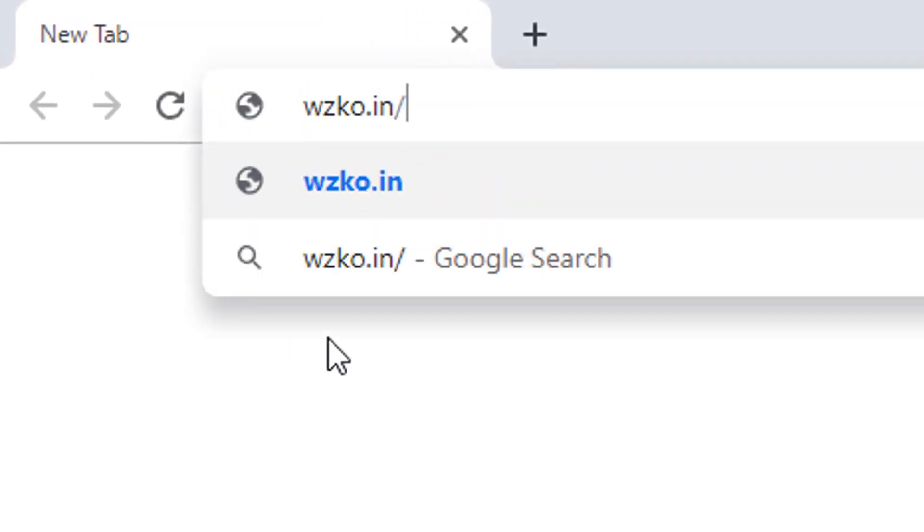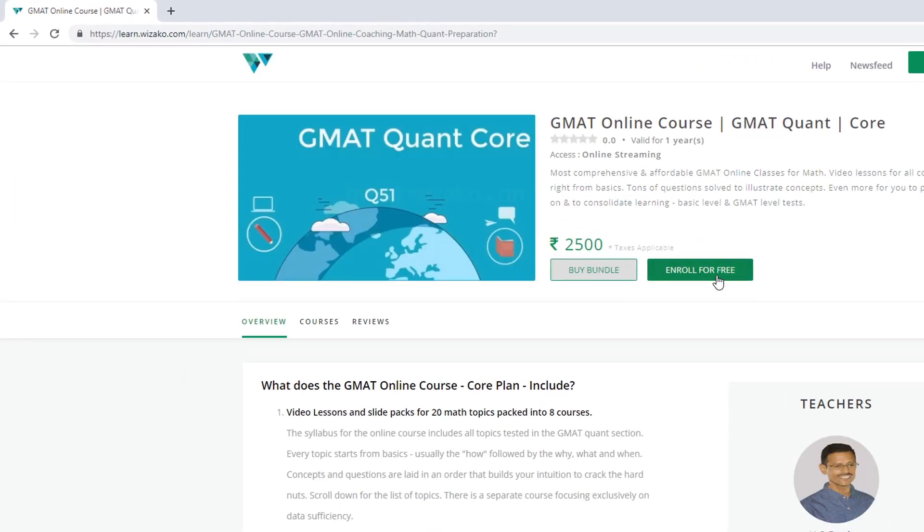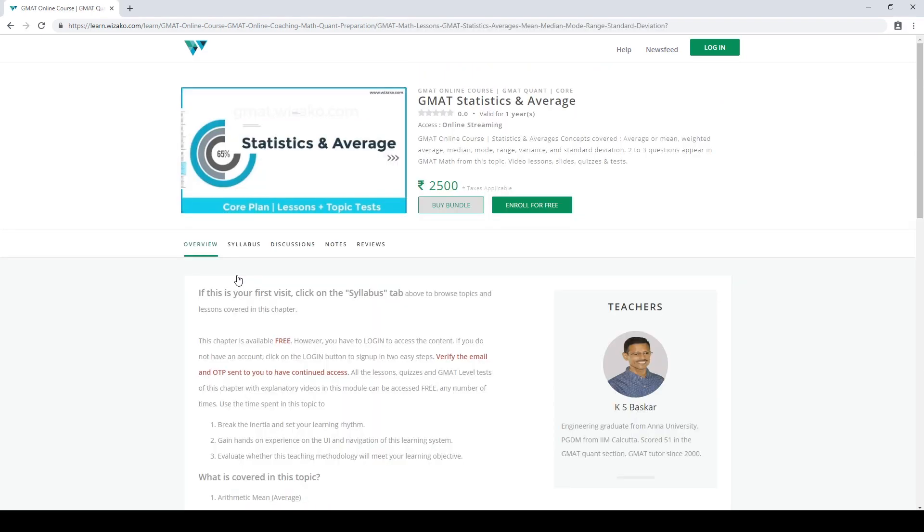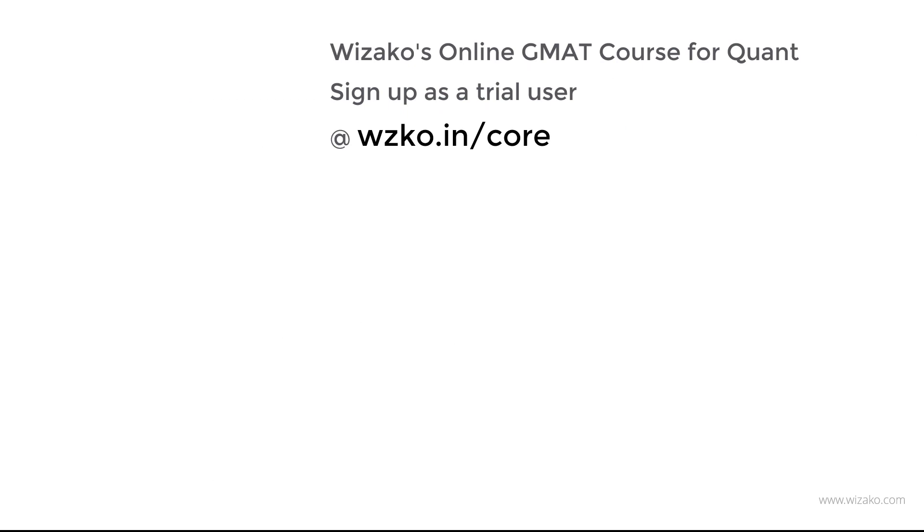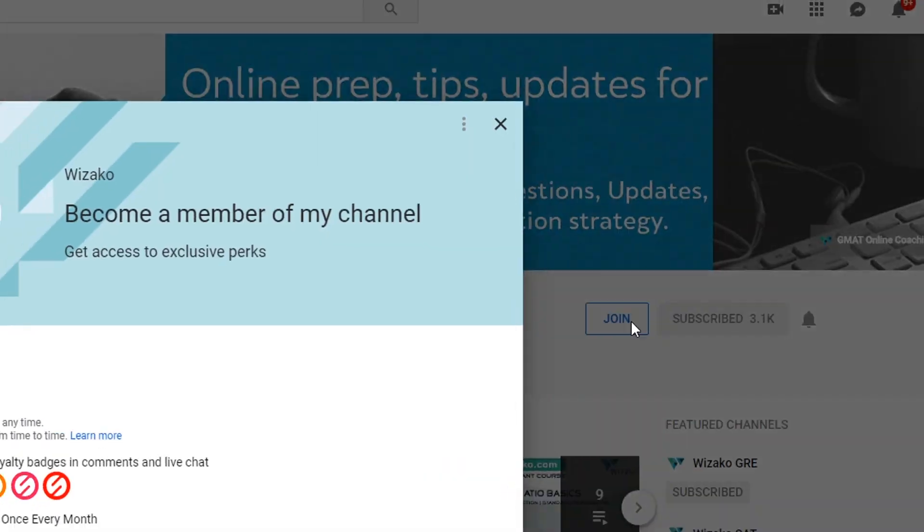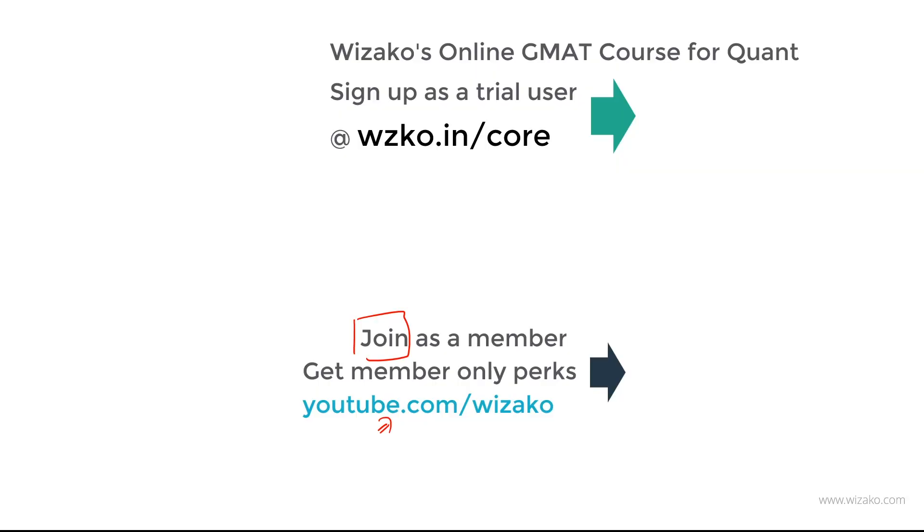Before you leave, do three things. One, sign up as a trial user for Wizako's GMAT online course at wzko.in/core. Get started with statistics on average, get momentum to your GMAT preparation. Pay and convert it into a paid user to get access to the remaining topics. Two, subscribe to this channel youtube.com and turn on notification. Lastly, you can join as a member of this channel, which is different from subscribing. There's a small monthly fee to pay to join as a member. You get some member-only perks which are not available for all subscribers. Click on the join button. Even before you pay, you'll get a listing of the member-only perks. Those member-only perks will help give a boost to your GMAT preparation. Best wishes.